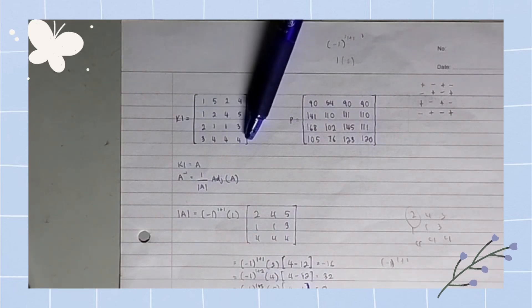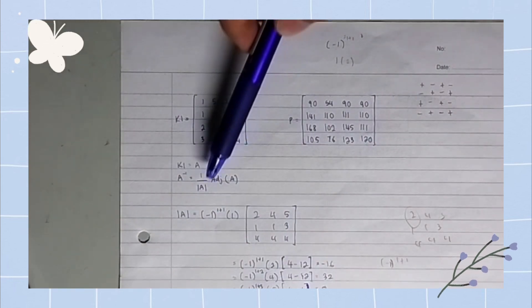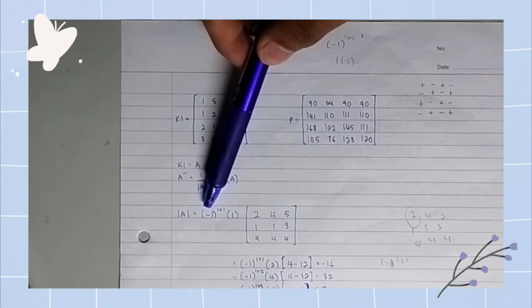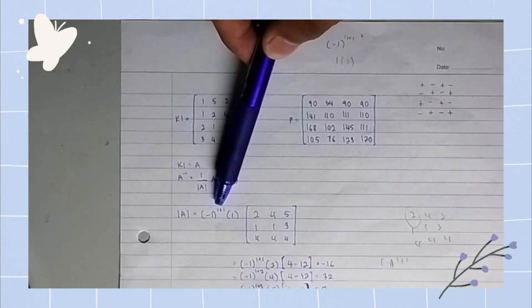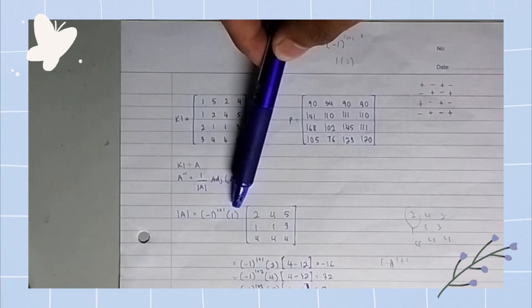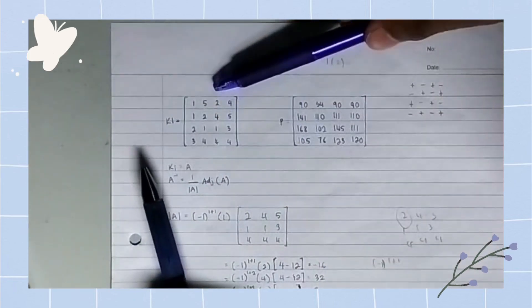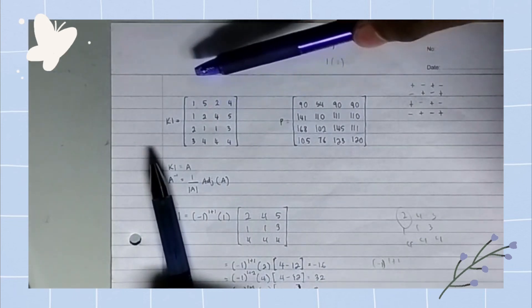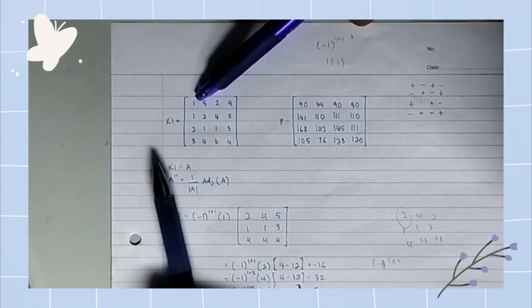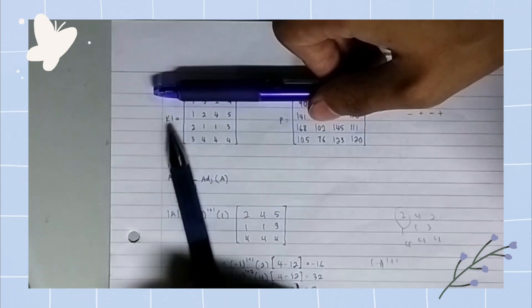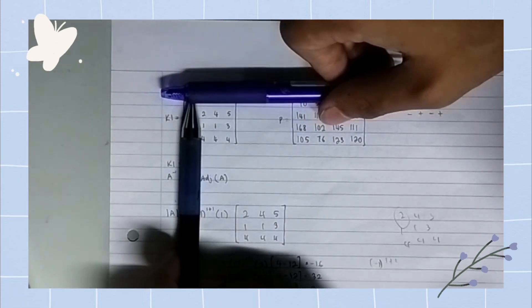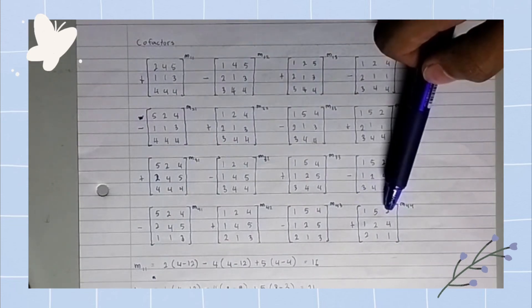The second step is to find the cofactors of each number from number one to number four. To find the cofactors, we use this formula: negative one to the power of the position of the matrix, times the number of the matrix, times the minor. To find the minor, we close the number — for example, number one has position (1,1), so we close row one and column one to get the minor. These are all the minors that we get.